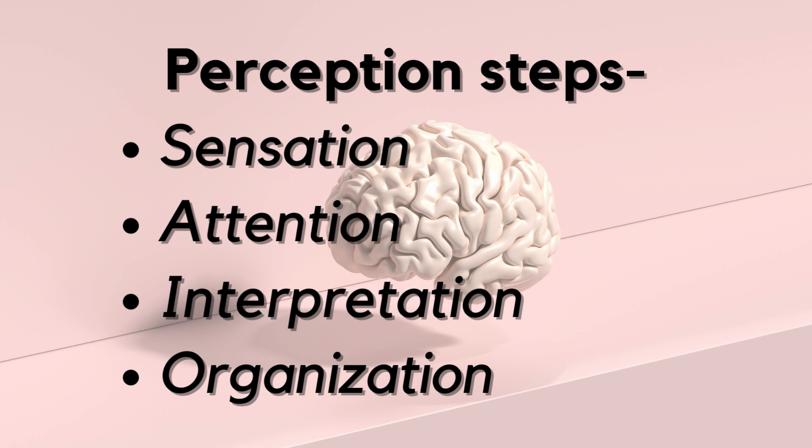Then comes organization. Your brain organizes the information it receives to create a coherent perception. It's like your brain putting together all the pieces of information to form a complete image of the flower.